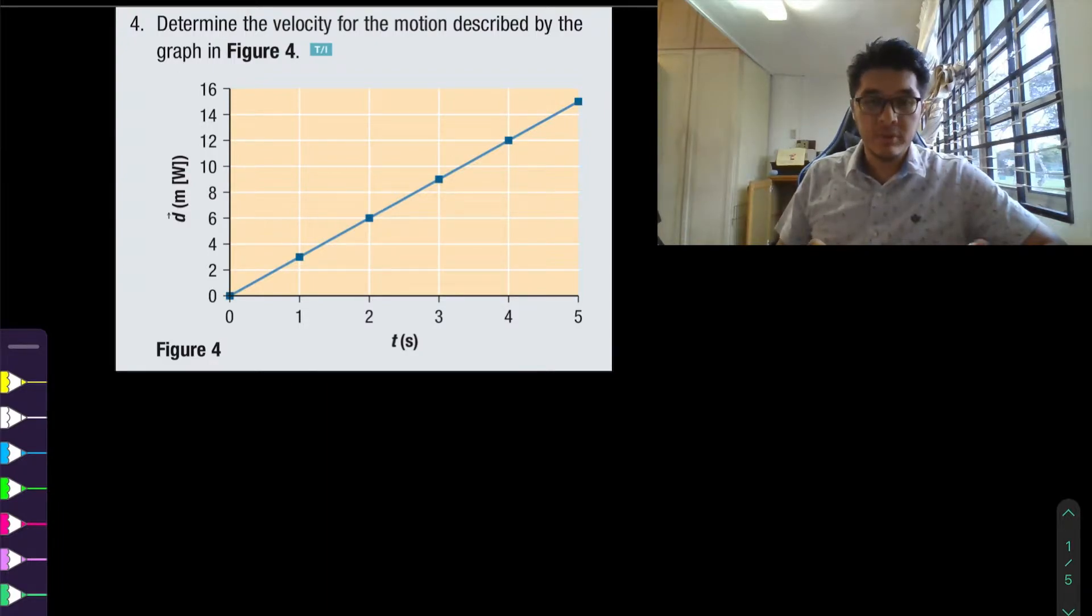So we're going to be looking at position versus time graph and from the graph we're able to get the slope which is going to be the average velocity and we're going to be doing some various calculations related to that.